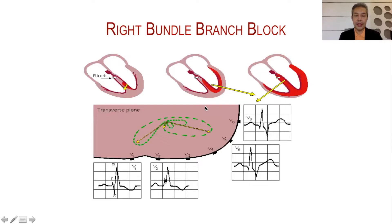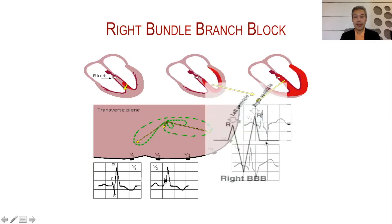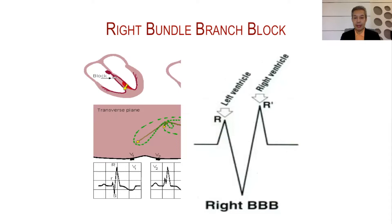In right bundle branch block, the left ventricle is activated first and the right ventricle is activated later. You will see broadening and notching — like rabbit ears — in V1 and V2, and the opposite change in V5 and V6. So it really depends on where you see the notching and broadening: V1 and V2 indicates right bundle branch block; V5 and V6 indicates left bundle branch block.